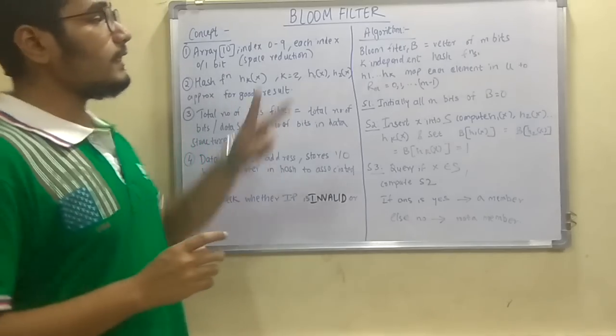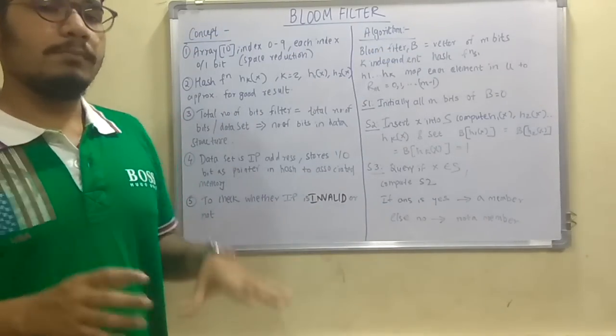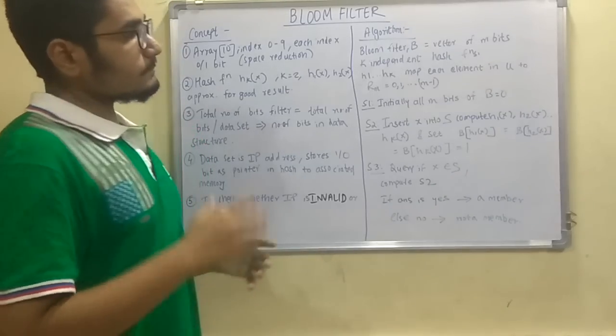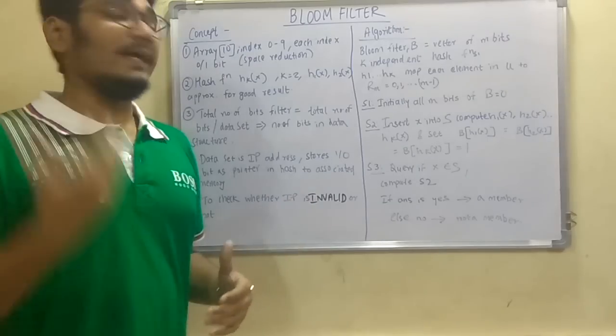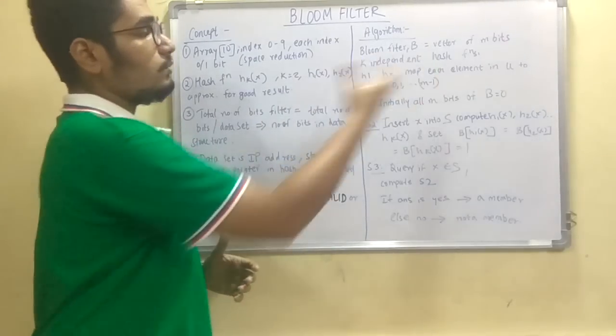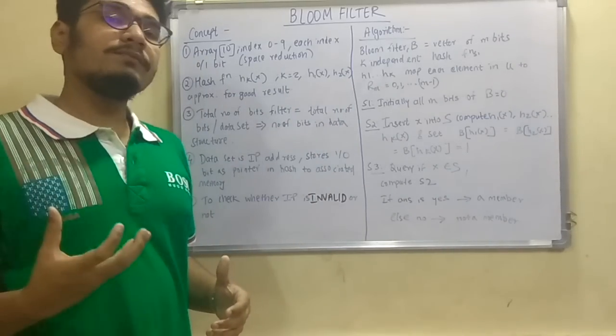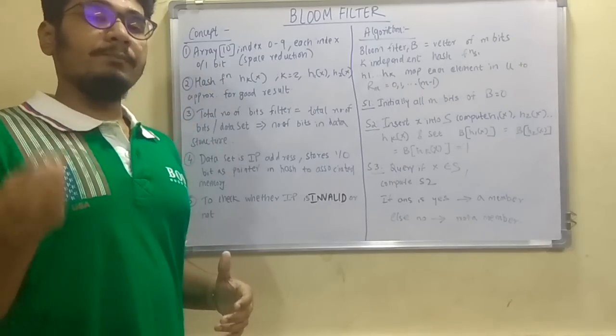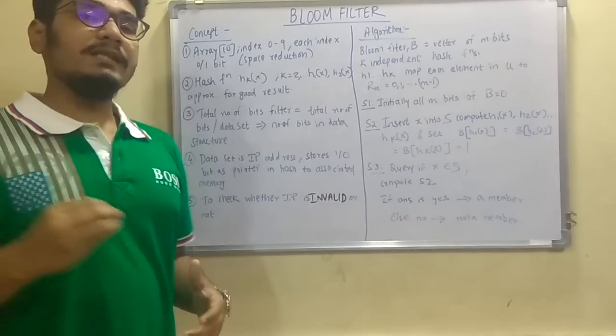So we take two elements, that is a bloom filter b. It will be a vector of m number of bits and k independent hash functions would be there. Now these hash functions will map from h1 to hk and each of these map elements to u, that is a universal set. And we maintain a record of these m elements as r(m) and we'll compute the values from 0, 1 up till m-1.